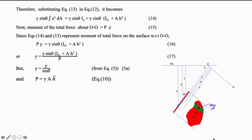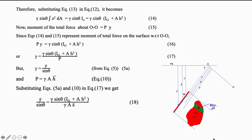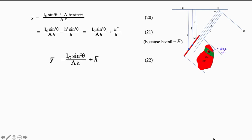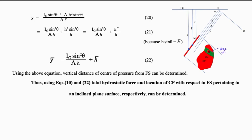Since Y equals Y-bar by sin theta and P equals gamma A H-bar, substituting these gives: Y-bar by sin theta equals gamma sin theta into (IG plus AH²) by (A H-bar). Therefore Y-bar equals sin²theta into (IG plus AH²) by (A H-bar), which simplifies to Y-bar equals IG sin²theta by (A H-bar) plus H-bar, where H-bar is the vertical depth of the center of gravity of the plane surface. Using these equations, total hydrostatic force and position of center of pressure for an inclined plane surface can be determined.